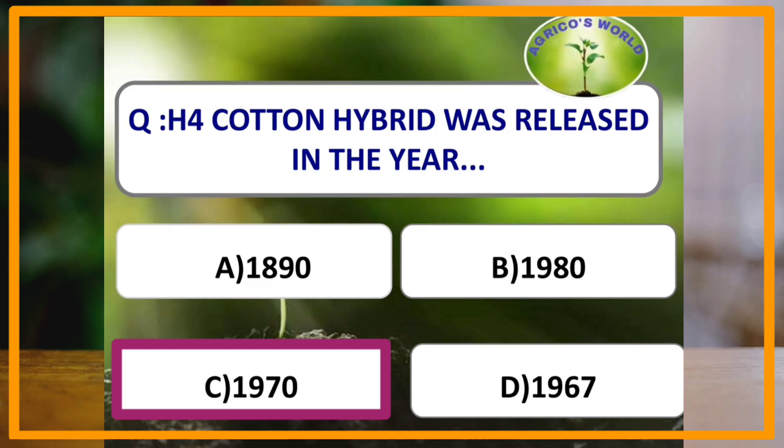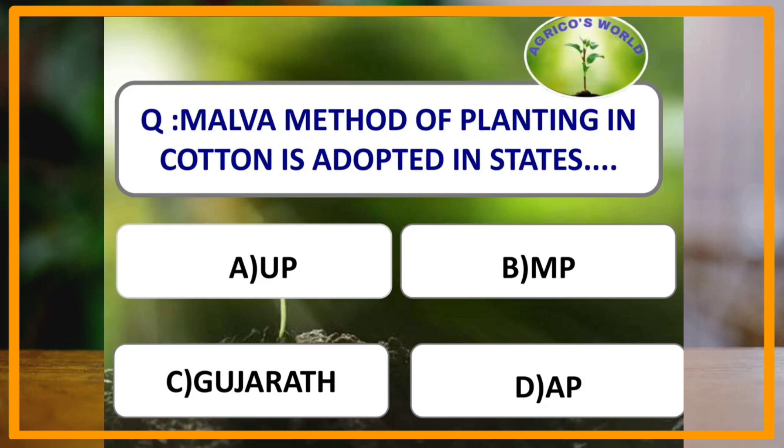The Malva method of planting in cotton is adopted in which of the following states? The Malva method of planting in cotton is adopted in Madhya Pradesh. It is a specialized method of sowing in cotton.